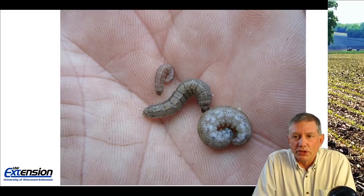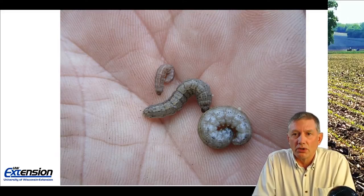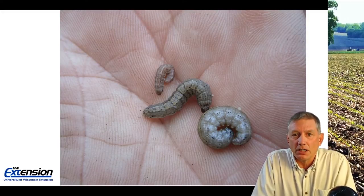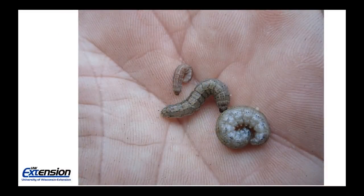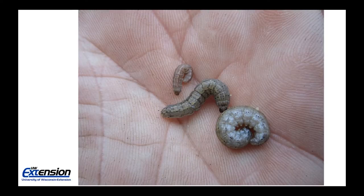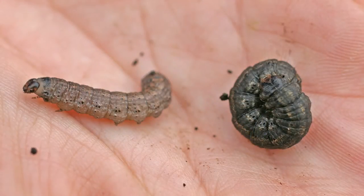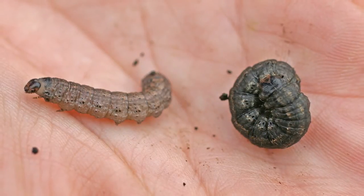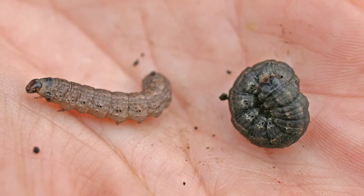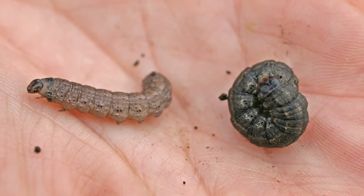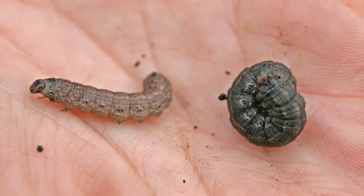Here's a shot of what the larvae look like at various stages of development. They're pretty nondescript, kind of grayish colors, some black dots on them, but there are no really identifiable characteristics for black cutworm.